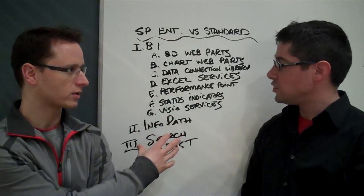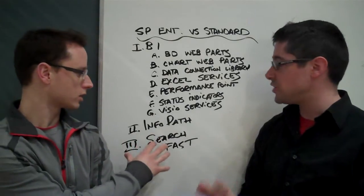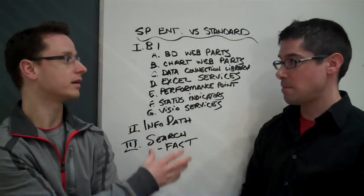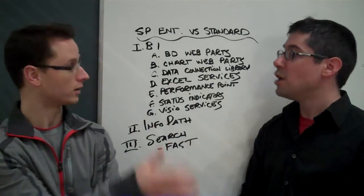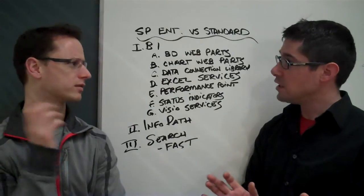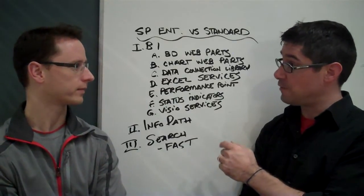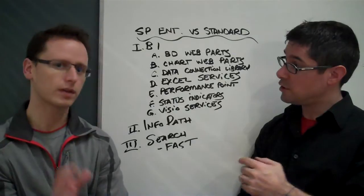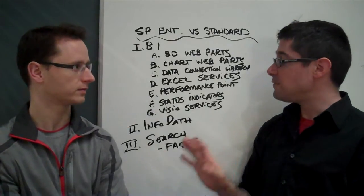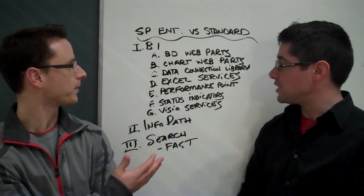There's an InfoPath story — InfoPath is my forms. Search is my search, Fast Search. For Fast Search, you need Enterprise CALs in order to use refinement and federated search. I'm fine with SharePoint Standard, but if you're thinking about upgrading to Fast Search, you need SharePoint Enterprise. The InfoPath — I understand why I want Excel Services.